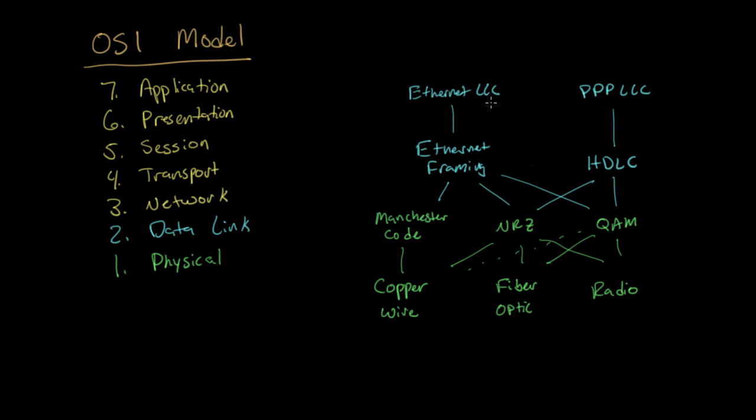So the Ethernet logical link control, which is the Ethernet frame format that we just looked at, or the PDP logical link control. Those are basically all of the layer one and layer two technologies that we'll talk about for now.